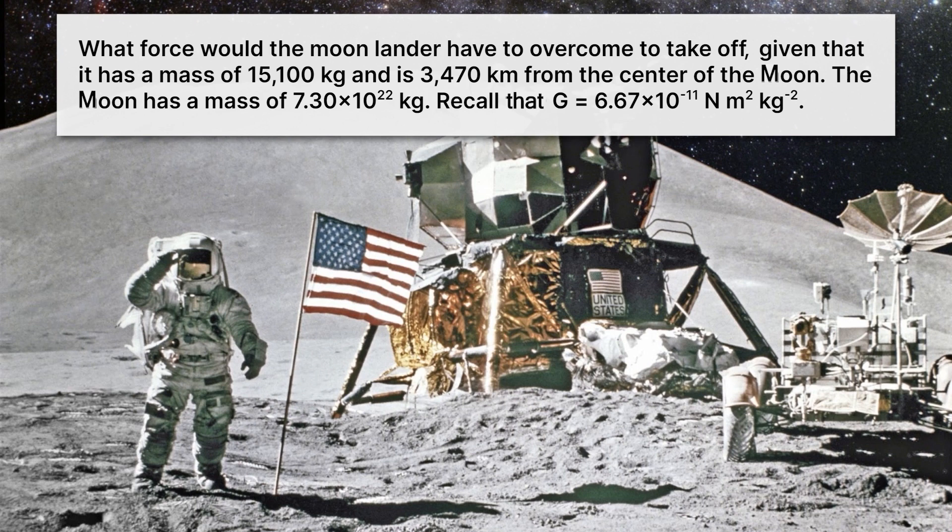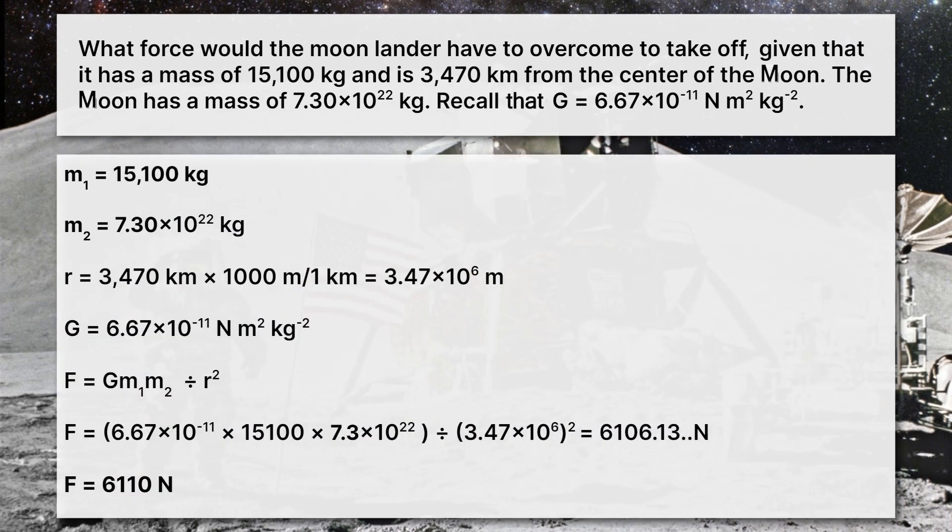Alright, pause the video. Give it a try. Were you able to get it? Now, let me show you the step-by-step answer. Essentially, we identify our two masses and our distance. Our distance was in kilometers, so we needed to convert that to meters. We remembered our big G, and then we just plugged into our equation, and we should have gotten 6,110 newtons. So if you didn't get that, pause the video, and look through step-by-step, and see where you went wrong.